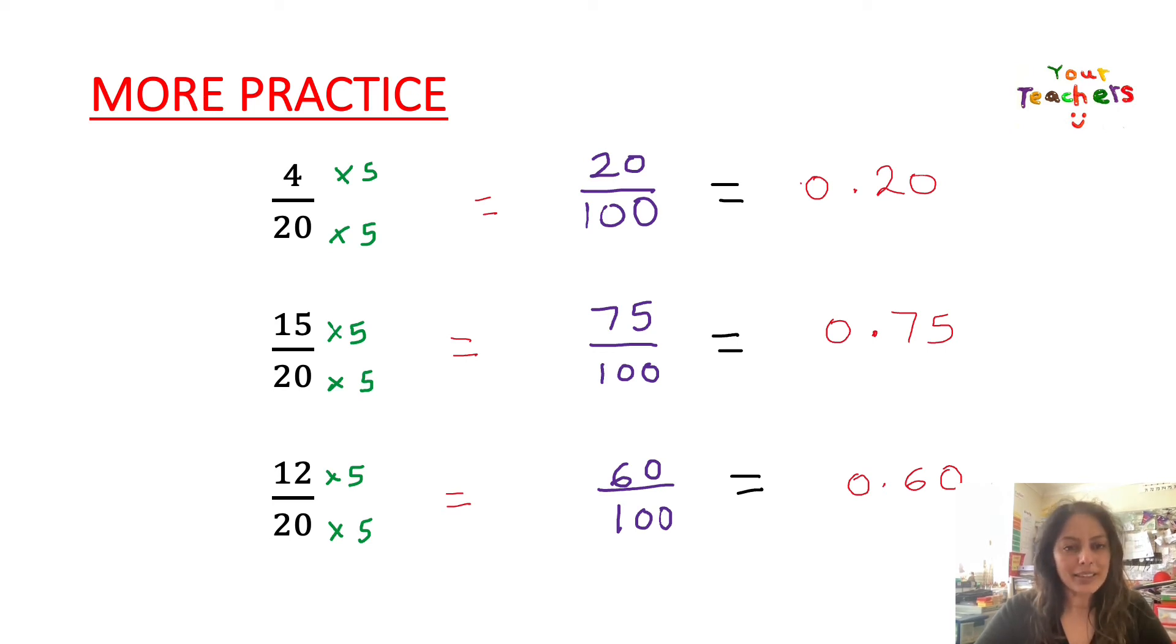15 over 20 becomes 15 times 5, 20 times 5. And that gives me 75 over 100. Now I can convert it to decimals, 0.75. And I've got 12 over 20. And again, multiplying by 5 gives me 60 over 100. And again, it's so much more easier now to convert to decimals.